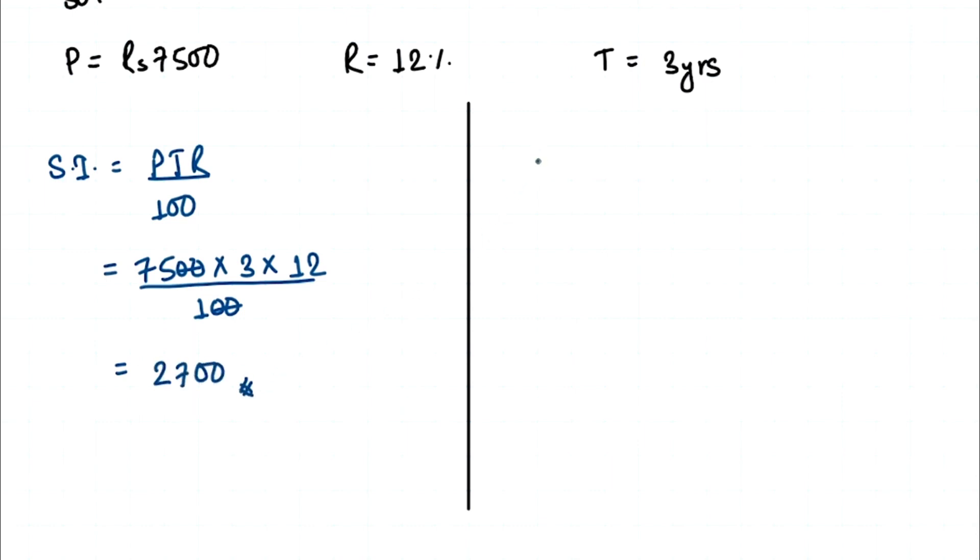Similarly, for compound interest, we have the formula P times bracket 1 plus R divided by 100 power T minus 1. So equals to 7,500 bracket, 1 plus 12 divided by 100 power 3 minus 1.